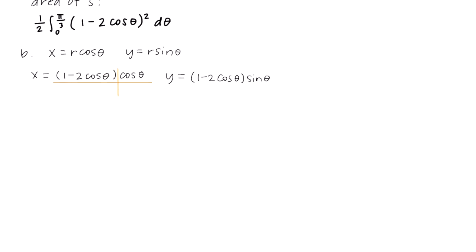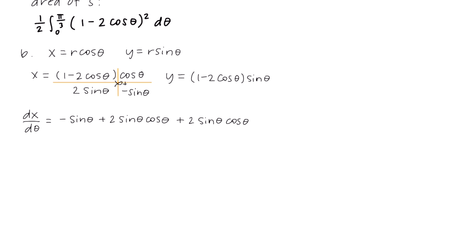To find dx/dθ, we differentiate x with respect to theta using the product rule since theta appears in both factors. The derivative of 1 minus 2 cosine theta is 2 sine theta, and the derivative of cosine theta is negative sine theta. Multiplying and combining terms: dx/dθ equals 2 sine theta cosine theta plus (1 minus 2 cosine theta)(negative sine theta), which simplifies to 4 sine theta cosine theta minus sine theta.